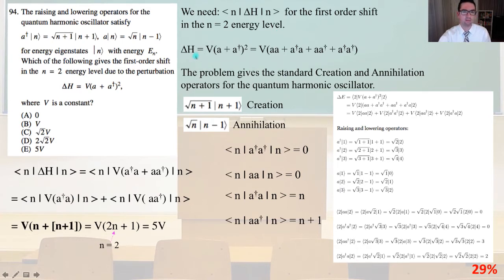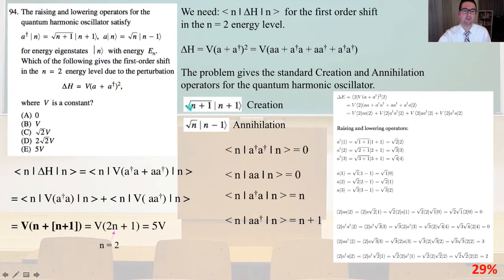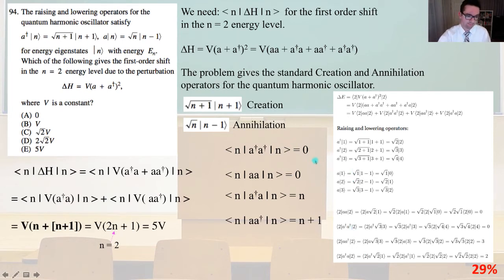So ΔH, as the problem gave, is V times the quantity (a + a†)², which equals — let's foil it out — V times the quantity a² plus a†a plus aa† plus a†². The problem gives the standard creation and annihilation operators for the quantum harmonic oscillator. We could go through all of the raising and lowering operators, but we can jump to the key results.